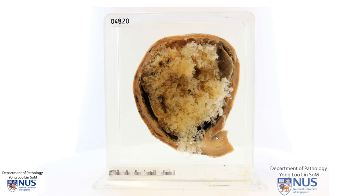Hello, this is a pathology specimen showing a uterus that has been bisected. We can see that this is the uterine fundus. We're looking mostly at the endometrial cavity, and this is the uterine wall. Over at this end, we can see the uterine cervix, which is partially truncated distally.